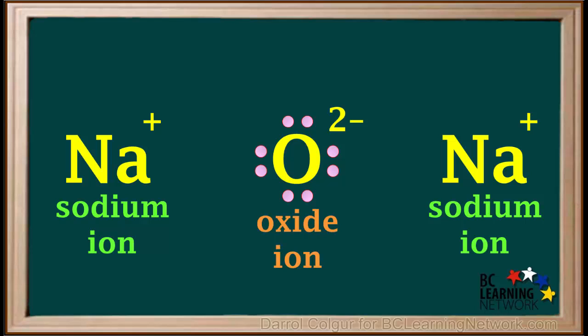Metallic oxides all contain oxide ions. Because sodium oxide is made up of ions, it is called an ionic compound.